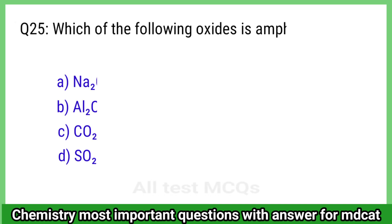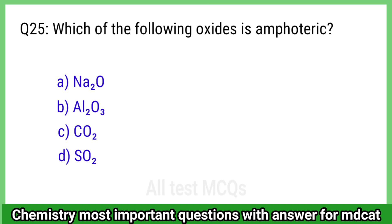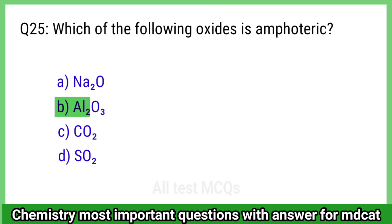Question 25: Which of the following oxides is amphoteric? The correct answer is option B, Al2O3.